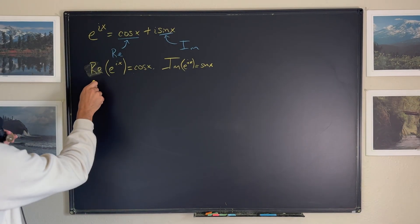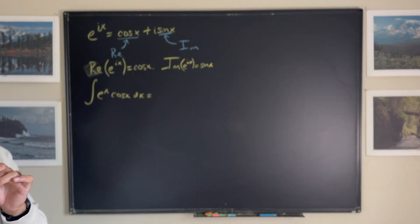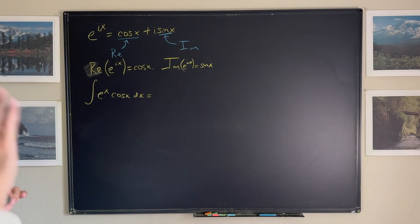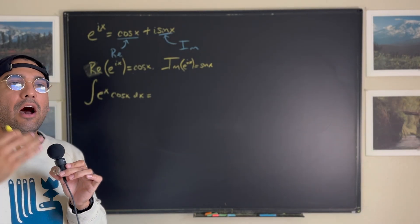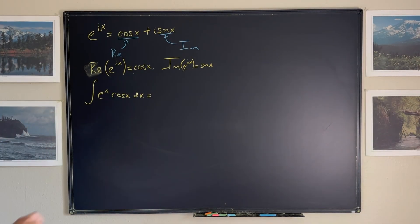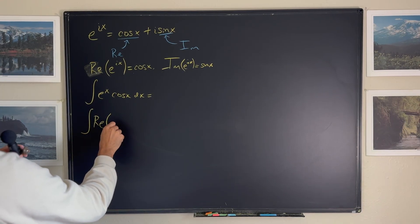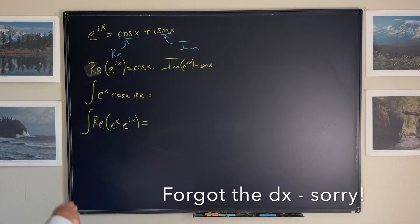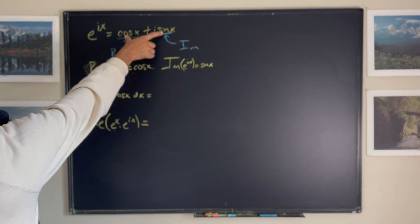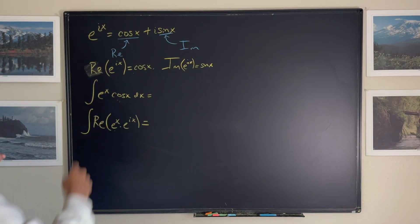Now let's say we want to solve the integral of e to the x times cosine of x dx. I know you can totally use integration by parts — there's nothing wrong with that — but I'm going to show you a cool trick to understand how the Euler formula works. Instead of integrating directly, I want the cosine, so I'll find the real part of the integral of e to the x times e to the ix. That's equal to e to the x times this entire expression, and calling for the real part makes it equal to the original integral.